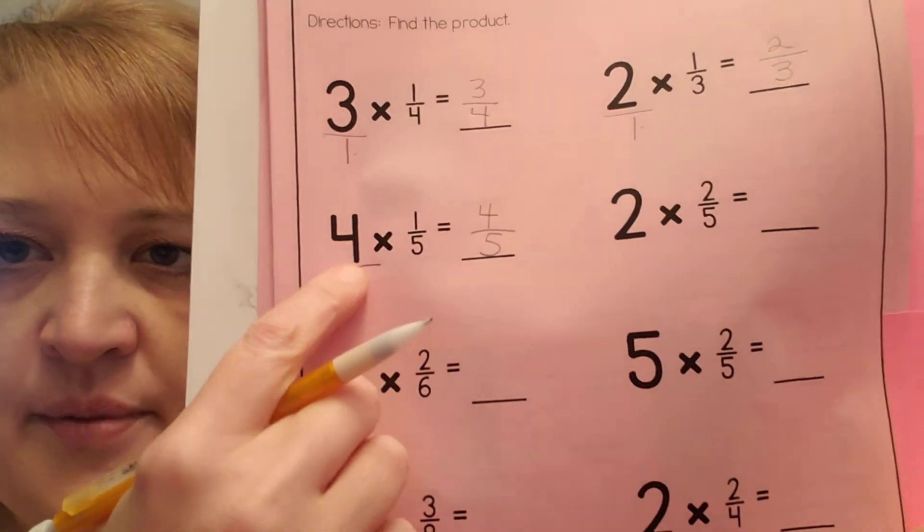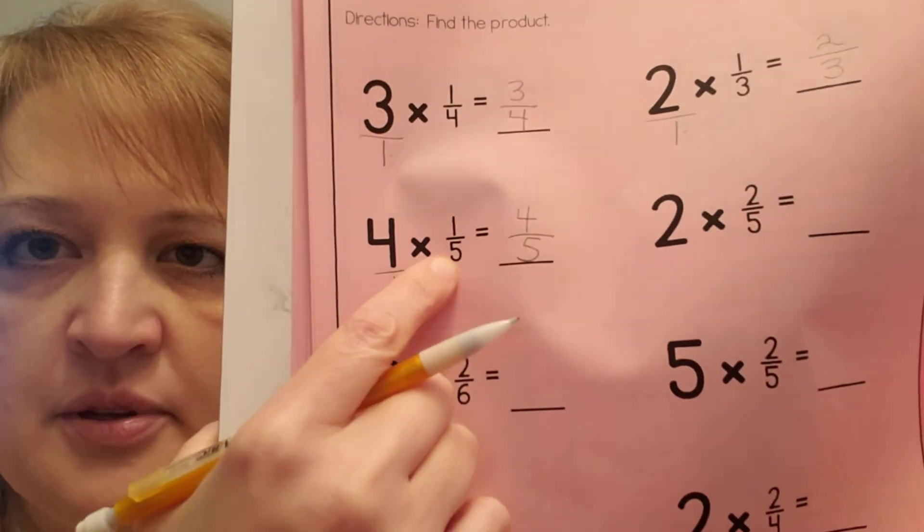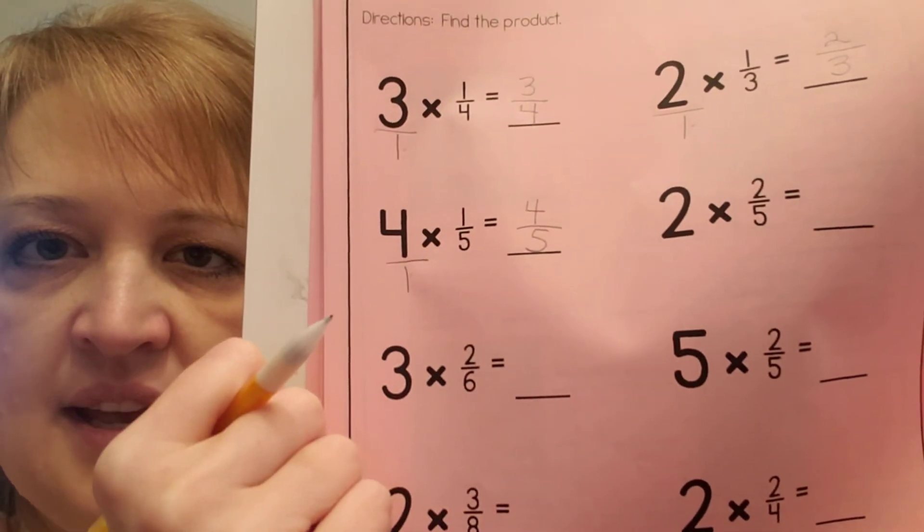So I want you to finish this page. Put the whole number over 1. Multiply the top. Multiply the bottoms. And get your answers. Okay. You're going to finish NF4. All right. Now you're going to go to NF6.